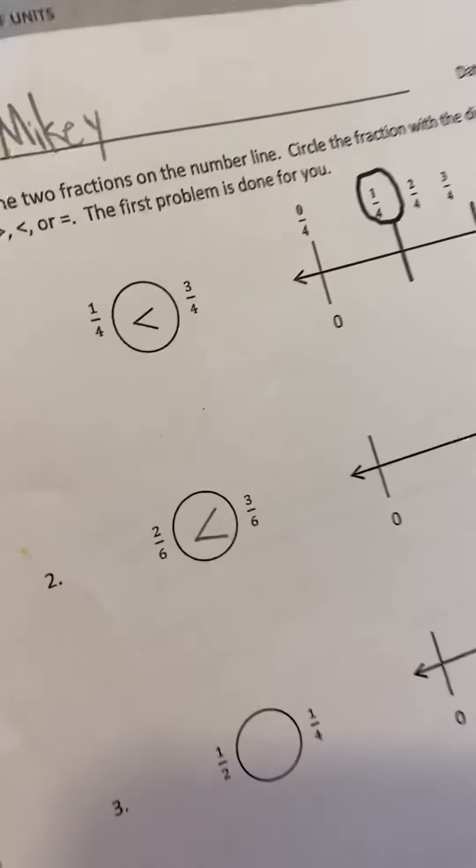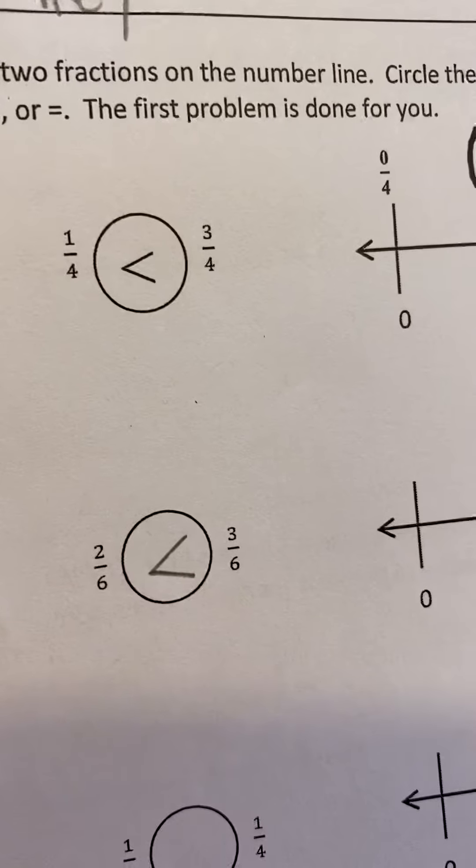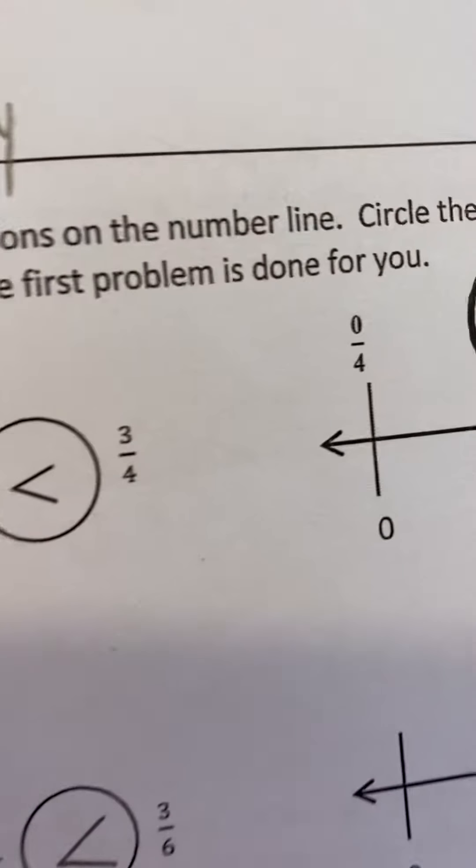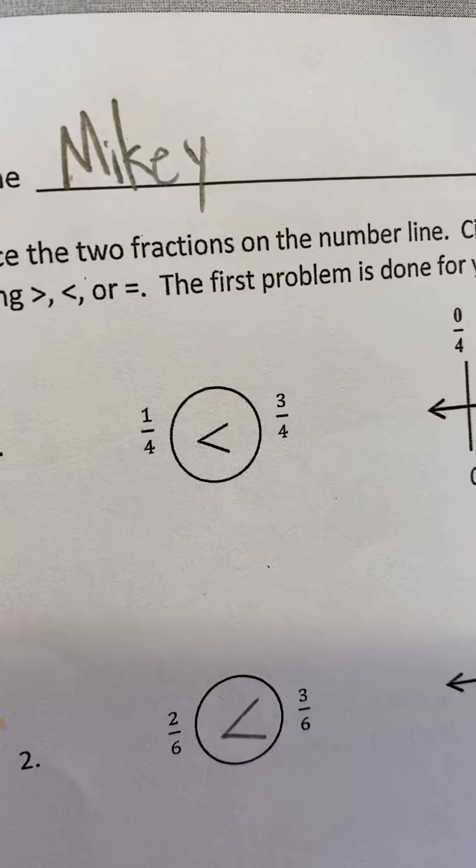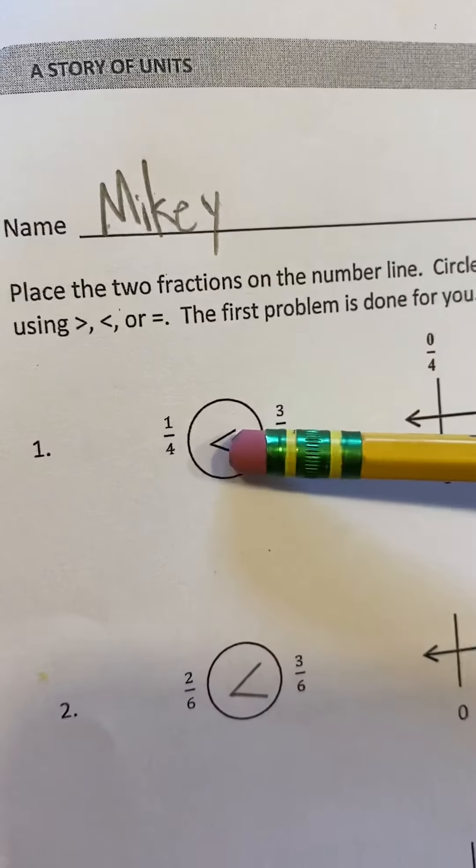The first problem is done for you. Okay, Mikey, now why does number one have that particular symbol in it? Yeah, because three-fourths is greater than one-fourth because it is closer to the right. That's very good. Yeah.